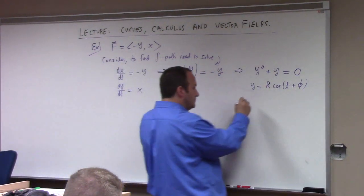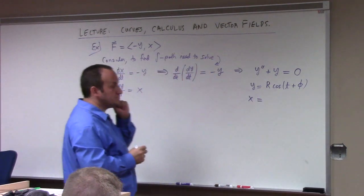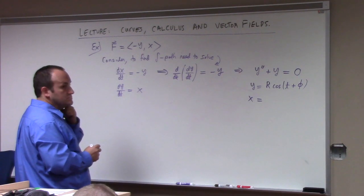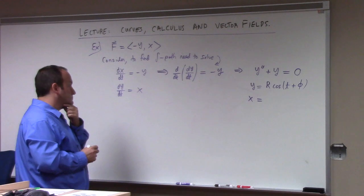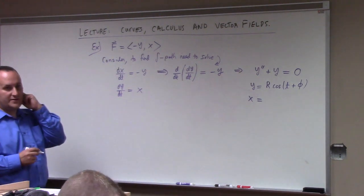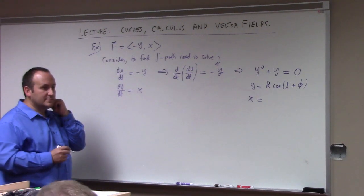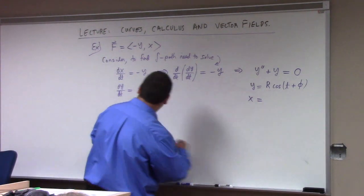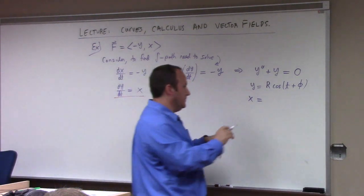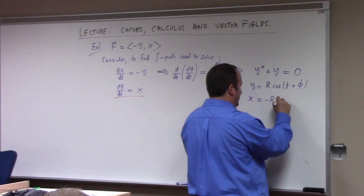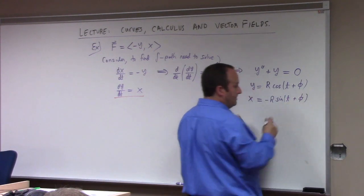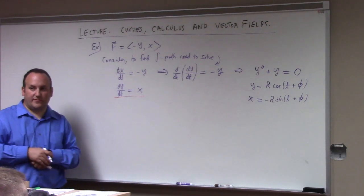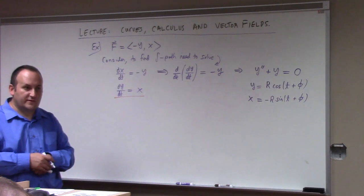And then what's x equal to? How do you find x now? Now, we found y, right? How do you find x? Exactly. It's right here. Just differentiate, and that gives us x. So x is minus r sine of t plus the phase angle. And so there you have it. That parameterizes a circle centered at the origin with radius r. And the tangent vector field to this curve will line up with the given vector field f.